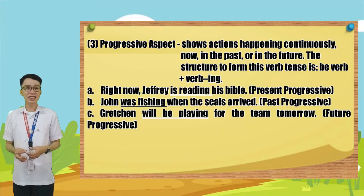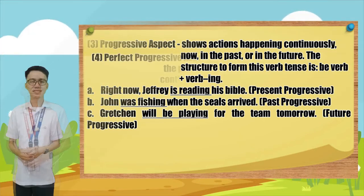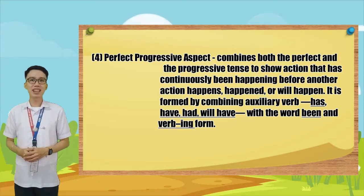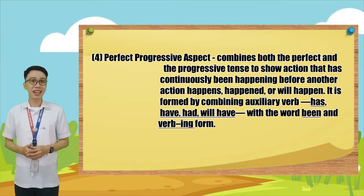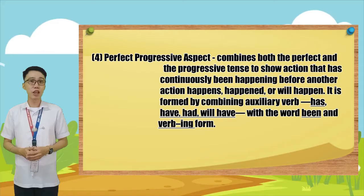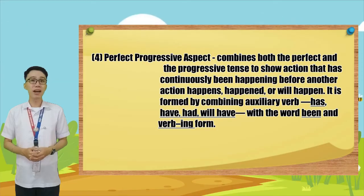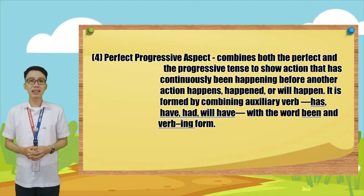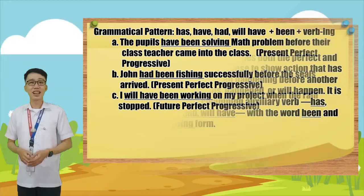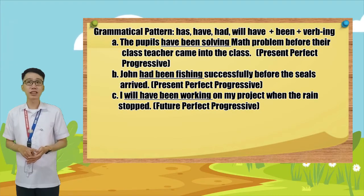Letter C: 'Gretchen will be playing for the team tomorrow.' What is the tense of the underlined verb? Good job, kids! In future progressive! Number four: perfect progressive aspect. Perfect progressive aspect combines both the perfect and the progressive tense to show action that has continuously been happening before another action happens, happened, or will happen. It is formed by combining auxiliary verb has, have, had, or will have with the verb been in verb-ing form. Grammatical pattern: has/have/had/will have + been + verb-ing.